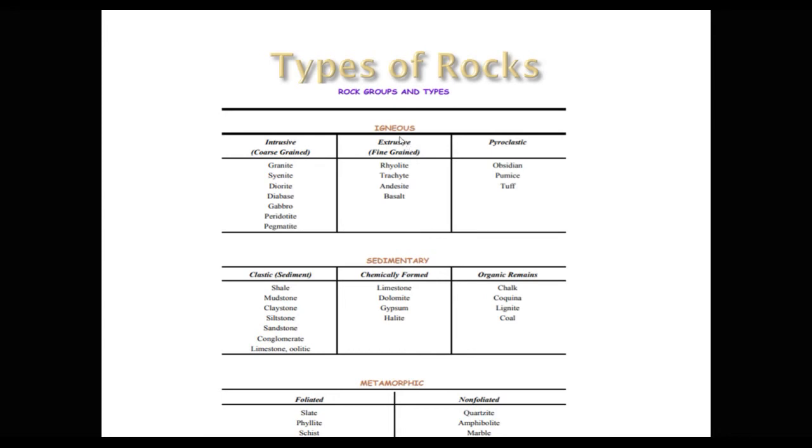These are various kinds of igneous, sedimentary, and metamorphic rocks. You'll see that some are coarse-grained, some are fine-grained. I really like this word, pyroclastic. Jokes apart, these are various forms of intrusive and extrusive rocks that all fall into the igneous rock category.